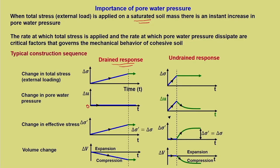Now let us see the undrained response. This is the increment of total stress during loading, and after this point it remains constant. For pore water pressure, this is the instant response — in the undrained condition water is not allowed to drain off fast, so there is a mounting of pore water pressure. Since it is saturated, there is an instant capture of delta sigma in terms of delta U. Whatever is the change in total stress remains the same as pore water pressure up to time T. After that, for a layman, there is no further change in loading — one would think nothing has happened to the system and there is nothing to worry about.